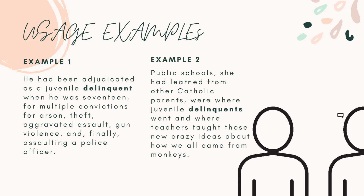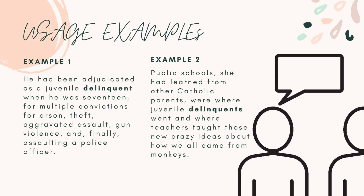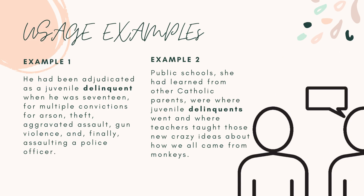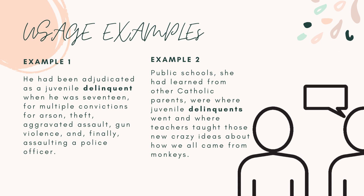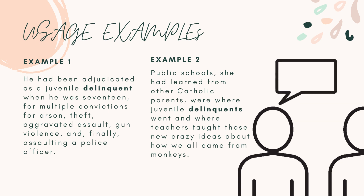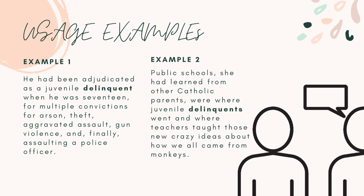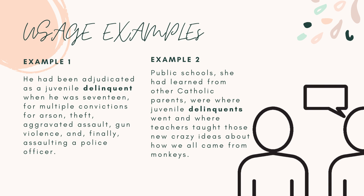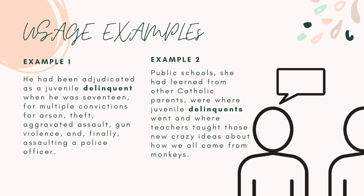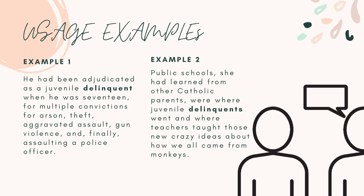Usage Examples. Example 1: He had been adjudicated as a juvenile delinquent when he was 17, for multiple convictions for arson, theft, aggravated assault, gun violence, and, finally, assaulting a police officer.